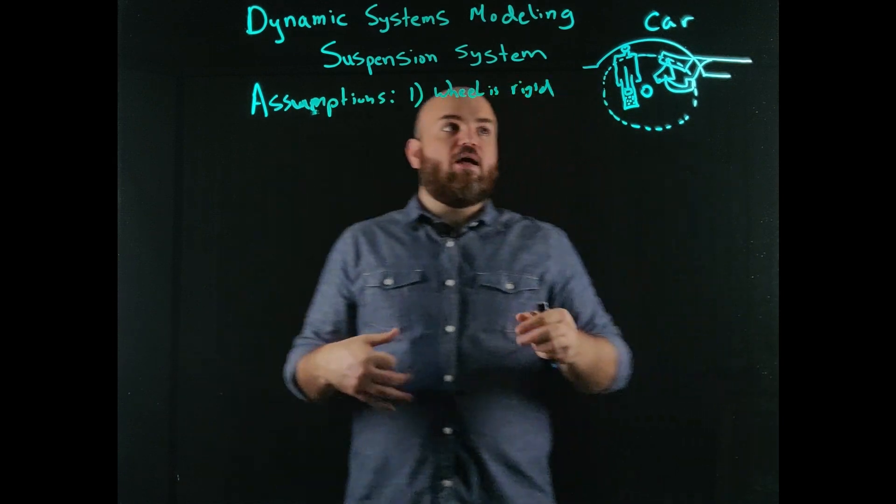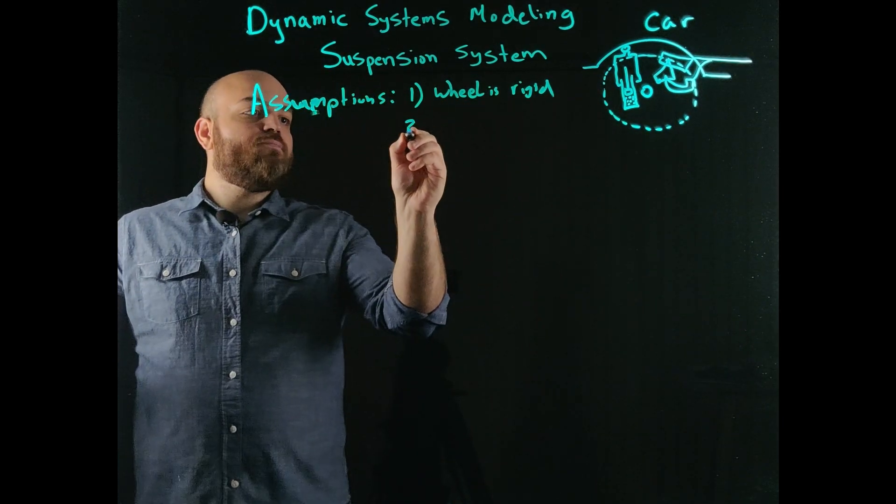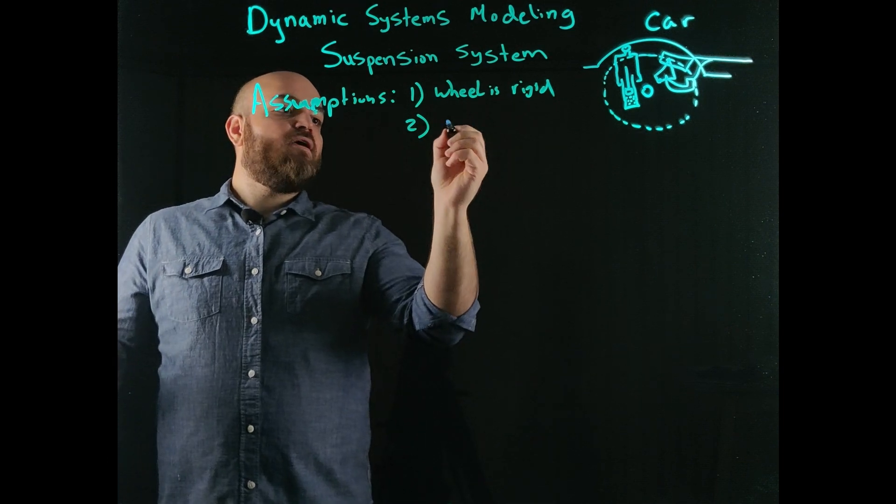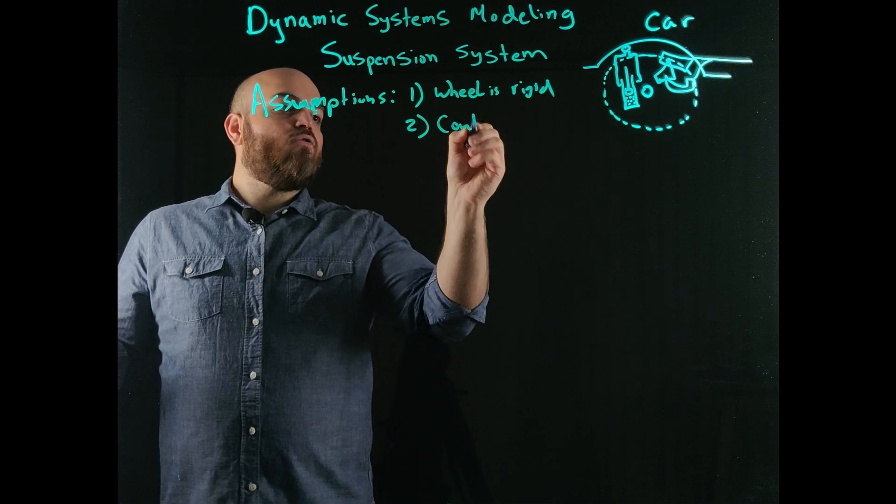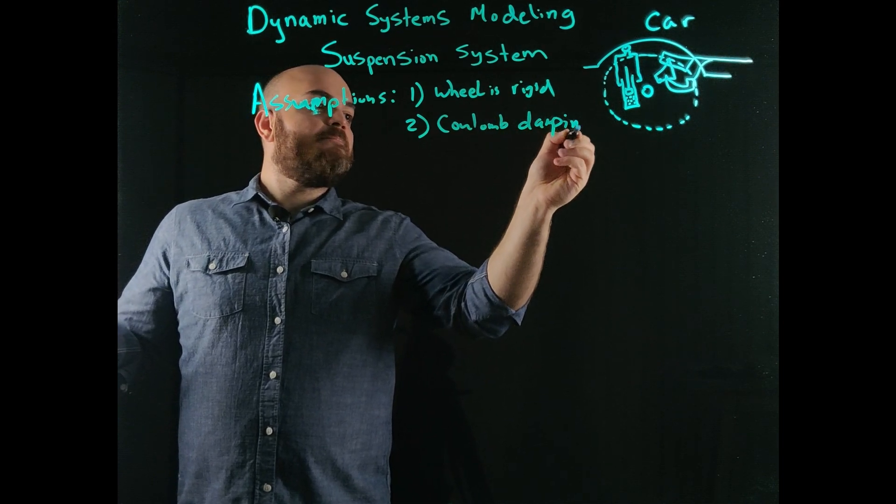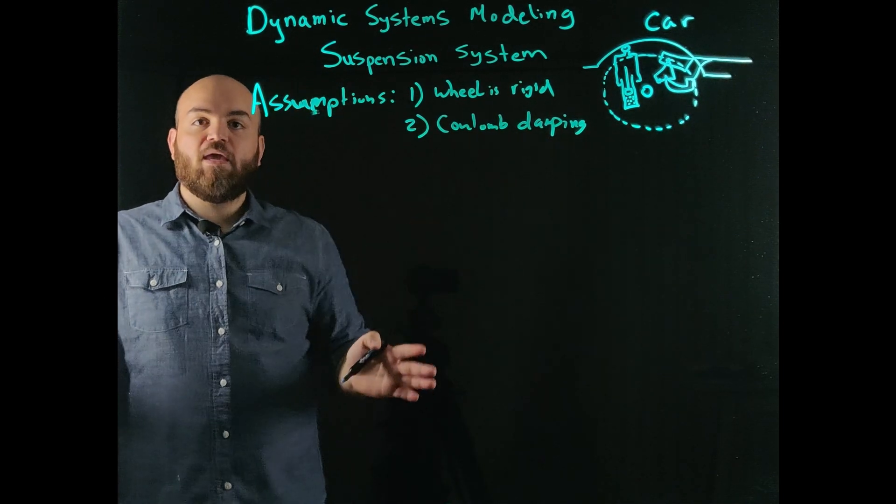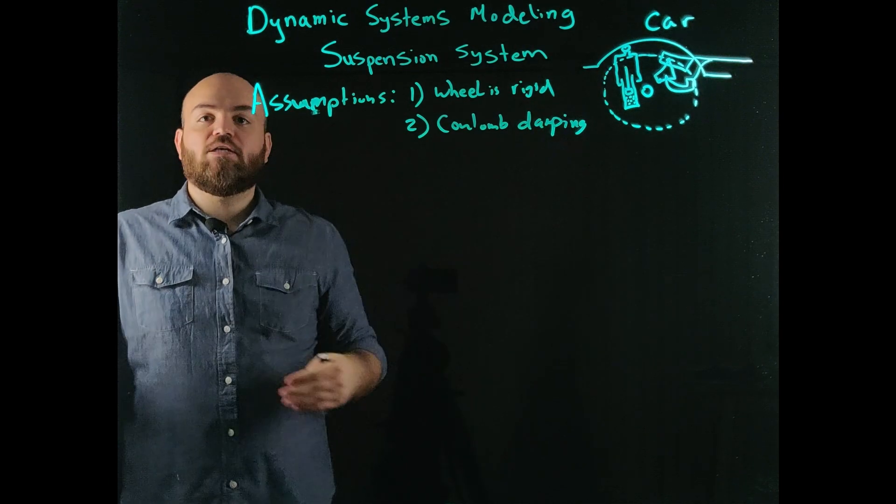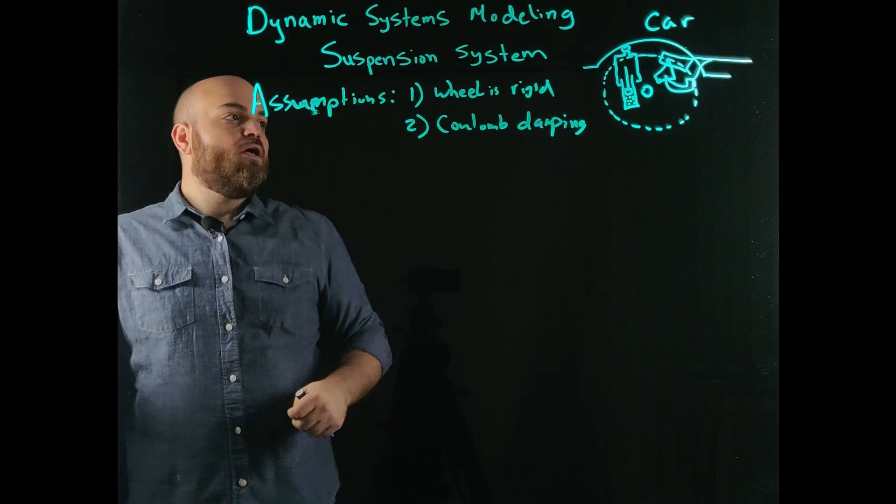Two, I have a Coulomb damping. And this means that the damping in this hydraulic cylinder is proportional to the velocity.